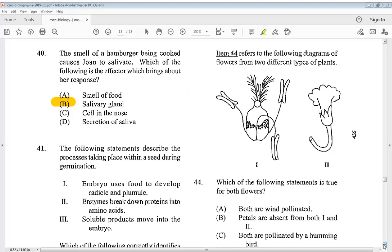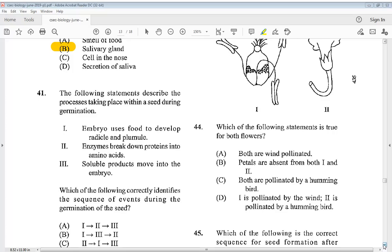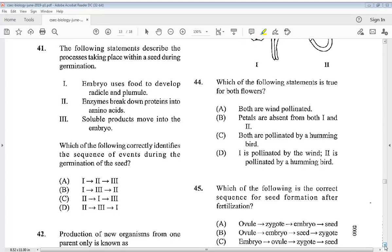Question 41: The following statements describe the processes taking place within a seed during germination. One, embryo uses food to develop radical and plumule. Two, enzymes break down proteins into amino acids. Three, soluble products move into the embryo. Which of the following correctly identifies a sequence of events during the germination of the seed? So we know it begins at three - enzymes break down protein into acids, soluble products move into embryo, embryo uses food to develop radical and plumule. So the answer would be D.